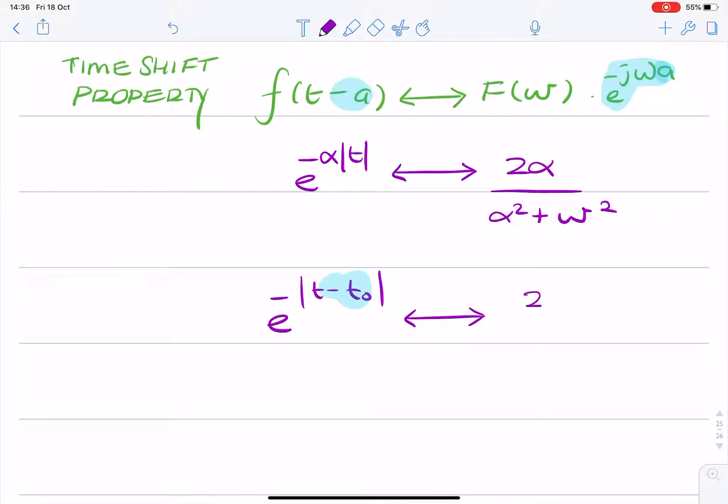So, in our case, the spectrum would be unchanged, alpha squared plus omega squared. We'd simply multiply by minus j omega T0.